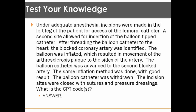Here is the last scenario. Under adequate anesthesia, incisions were made in the left leg of the patient for access of the femoral catheter. A second site allowed for insertion of a balloon-tipped catheter. After threading the balloon catheter to the heart, the blocked artery was identified. The balloon was inflated, which resulted in movement of the atherosclerosis plaque to the sides of the artery. The balloon catheter was advanced to a second blocked artery and the same inflation method was done with good result. The balloon catheter was withdrawn, and the incision sites were closed with sutures and pressure dressings.